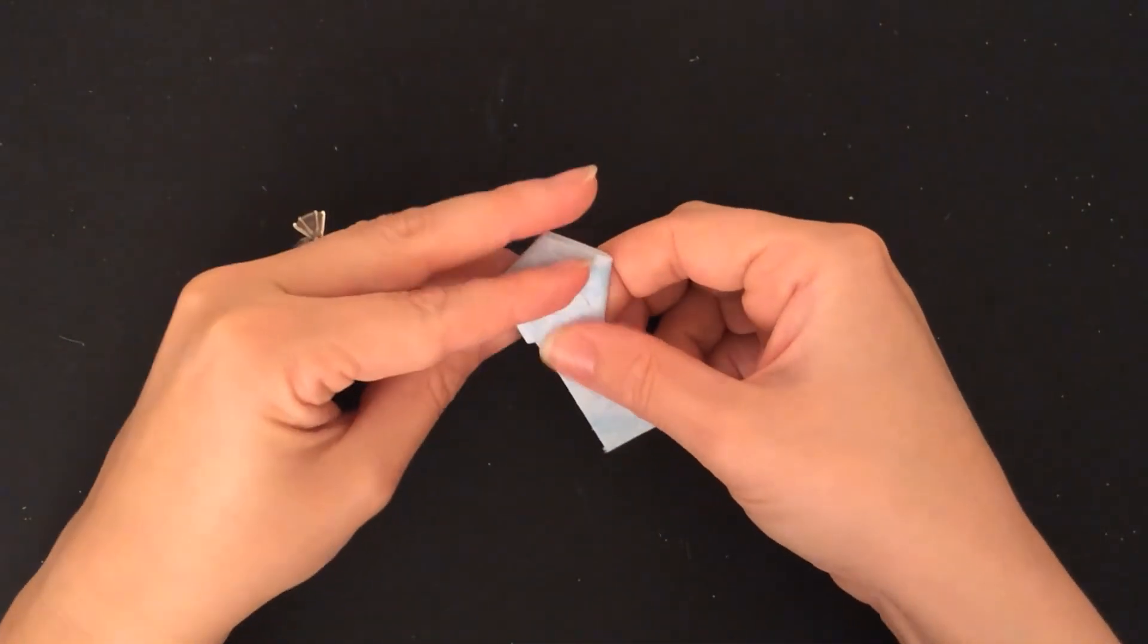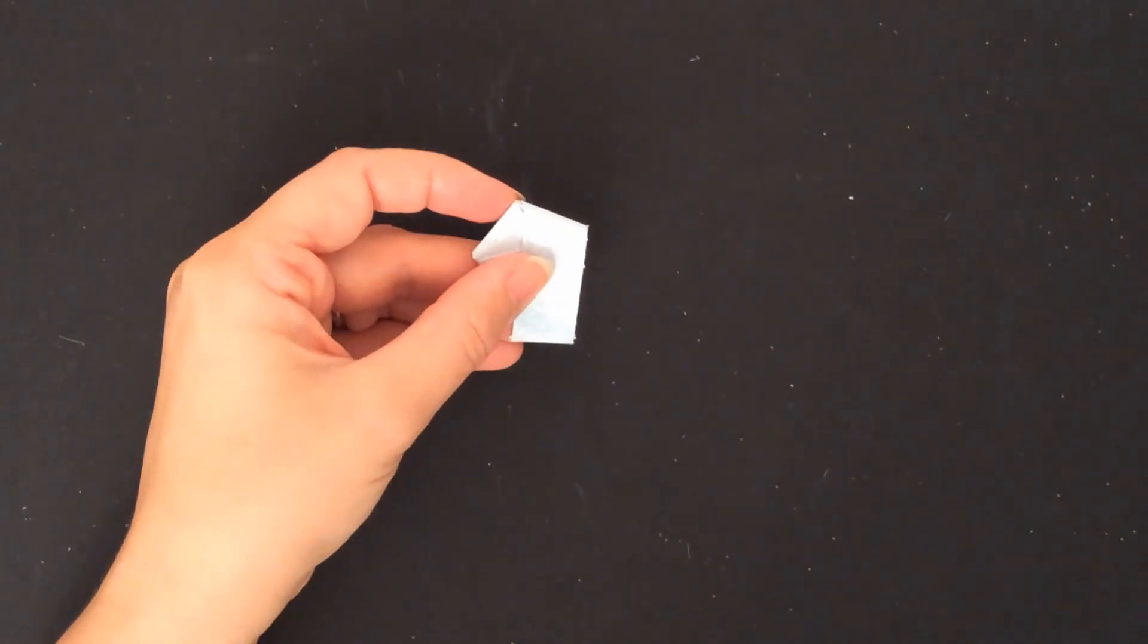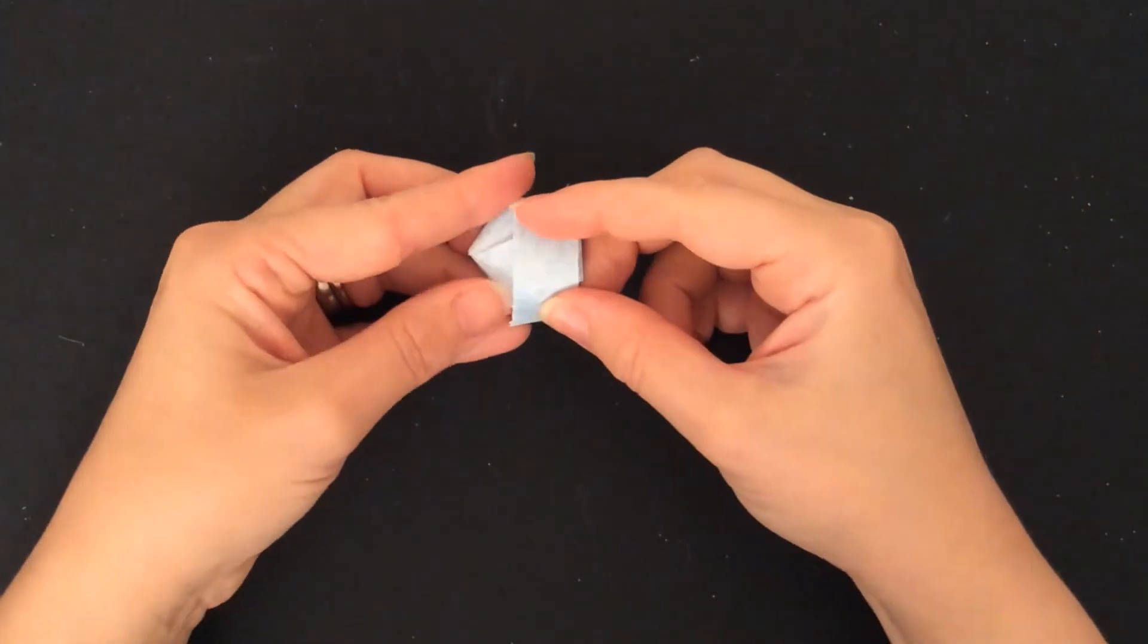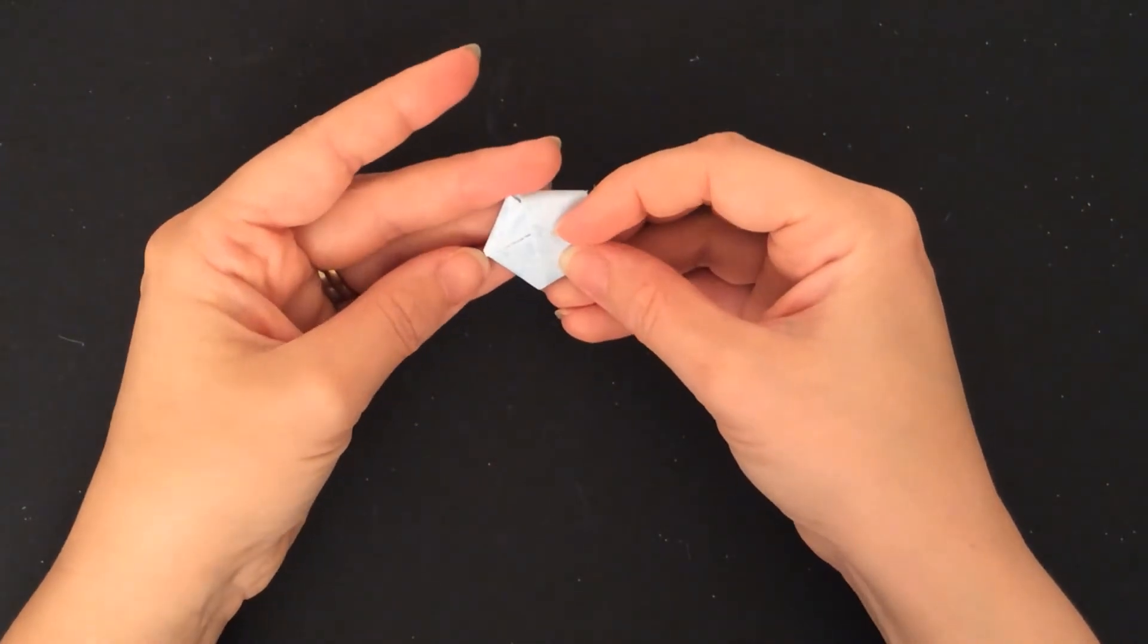You're just going to wrap your paper exactly where the paper wants to go around the edges of that pentagon, making sure that it's as neat as possible and that all of the edges line up. And you'll find as you're wrapping this, it just sort of wants to go there. So it's not a difficult process.